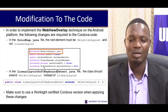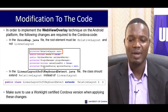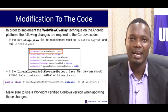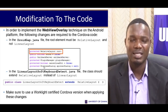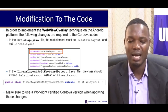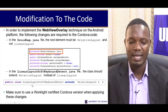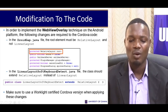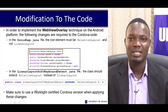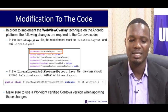To implement the WebView overlay technique on the Android platform, the following changes are required to the Cordova code. In the droidgap.java file, the root element must be a relative layout and not a linear layout. Also, in the linear layout soft keyboard detect Java file, the class should extend the relative layout instead of the linear layout. Make sure to use a WorkLite certified Cordova version when applying these changes.